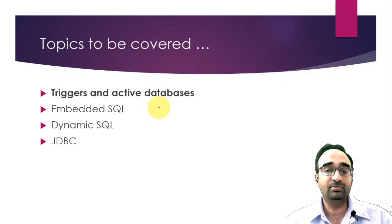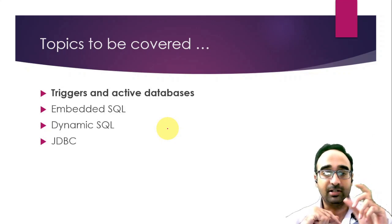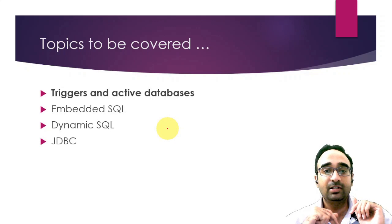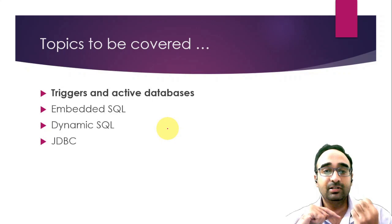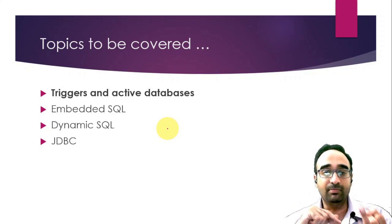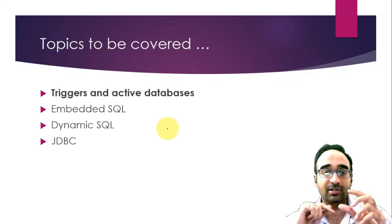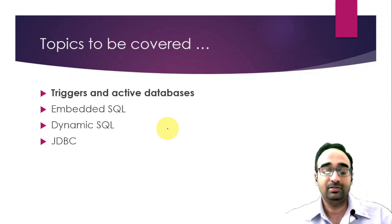A trigger is some code written using the syntax of SQL, and this code executes at a particular point specified while creating the trigger. You all know about DML statements in SQL — insert, update, and delete. If you want to execute some code before or after executing insert, update, or delete commands, the thing you can use is a trigger. Whatever code you write inside the trigger will execute before or after those DML commands.